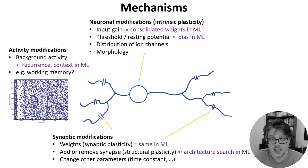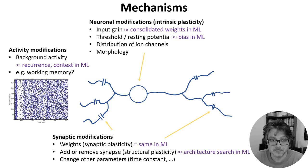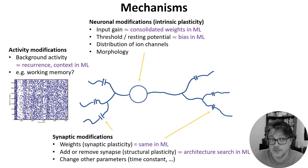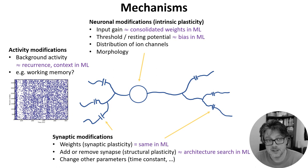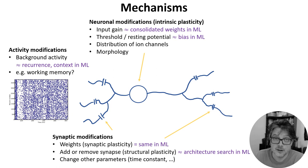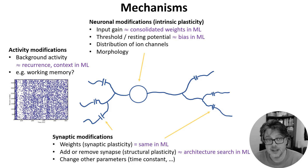Another key thing that changes the behavior of a neuron is the nature of its inputs, including the background activity of the network. Learning or memory doesn't have to be stored in permanent changes to the structure of the neuron or synapses. Zero-shot learning and language models using the context of the query could be thought of as fitting this pattern. In neuroscience, working memory is the things you hold temporarily in your brain in order to solve a task. A commonly held theory is that this is implemented by persistent patterns of activity in the brain and not by any permanent change.